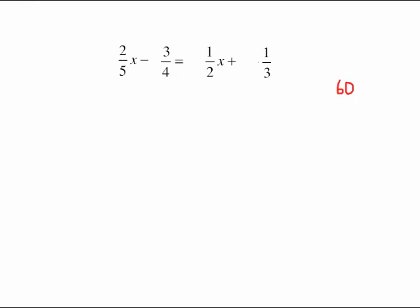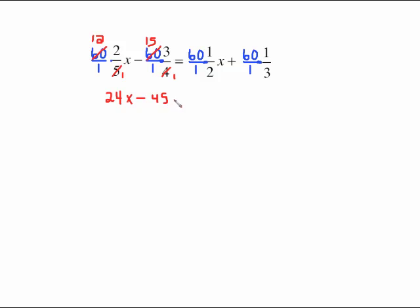So I'm going to write 60 times each one of those fractions and just do my individual canceling. 5 into 5 once, 5 into 60 12 times, then 12 times 2 which is 24x, minus over here 4 into 4 once, 4 into 60 goes 15 times, 15 times 3 is 45, equals 2 into 2 once, 2 into 60 30 times, 30 times 1 is 30x.